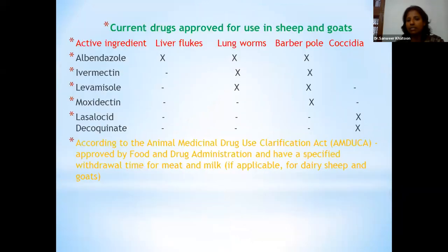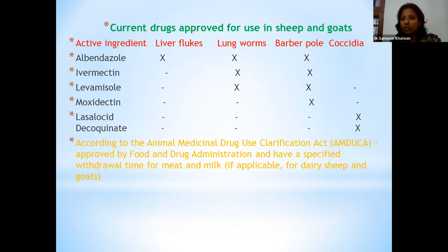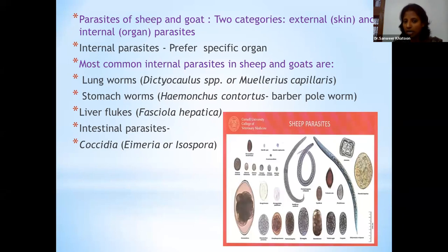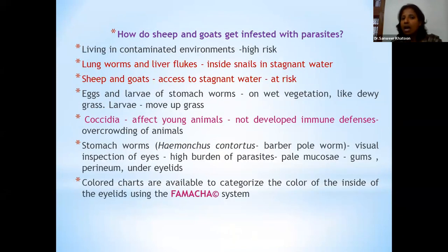According to the Food and Drug Administration and the Animal Medicinal Drug Clarification Act, certain drugs are regularly approved for use in sheep and goat — for liver fluke, coccidia, and Haemonchus: albendazole, ivermectin, levamisole, and moxidectin. For coccidia, lasalocid is recommended. The most important common parasites that challenge veterinarians across the country are stomach worms, liver flukes, immature amphistomes, and coccidian parasites.